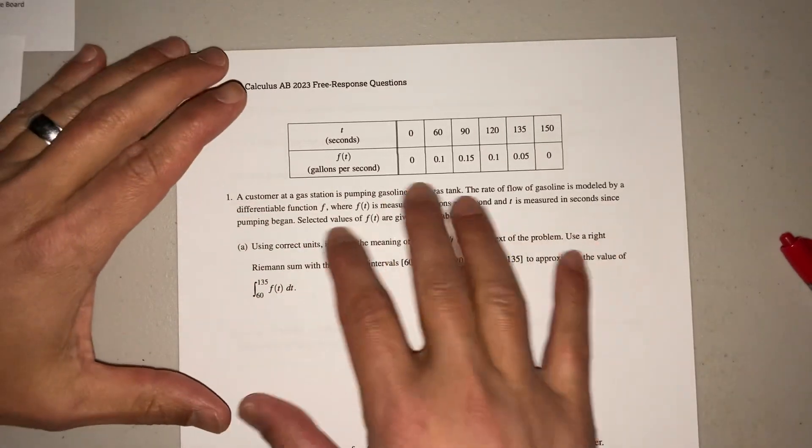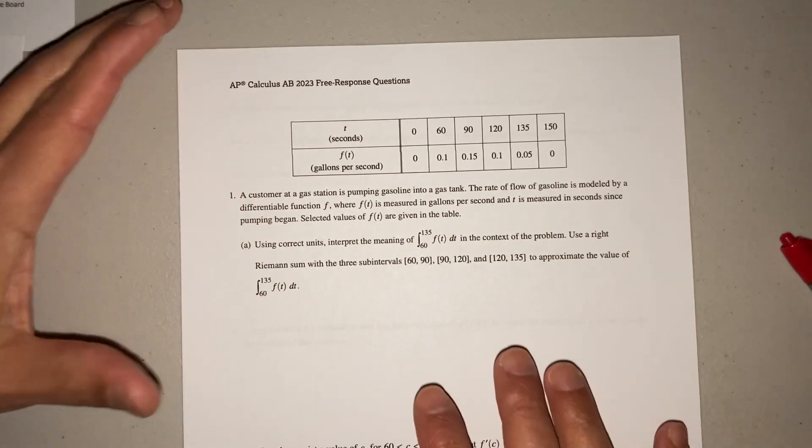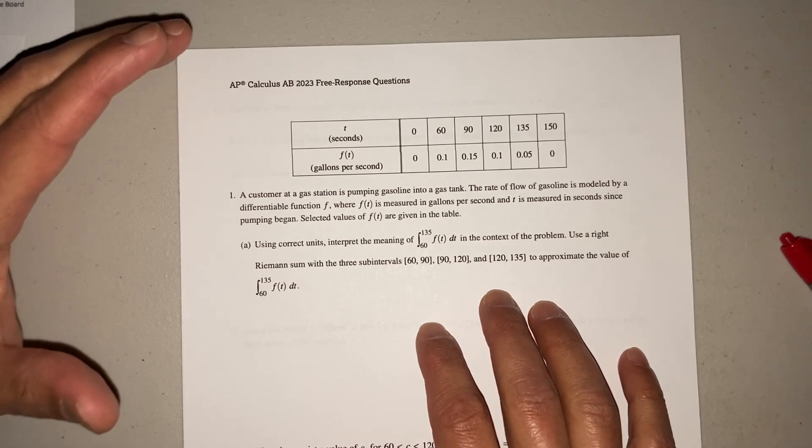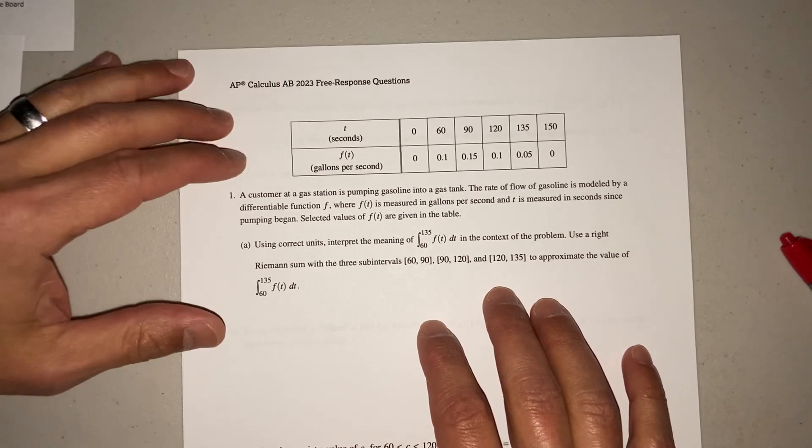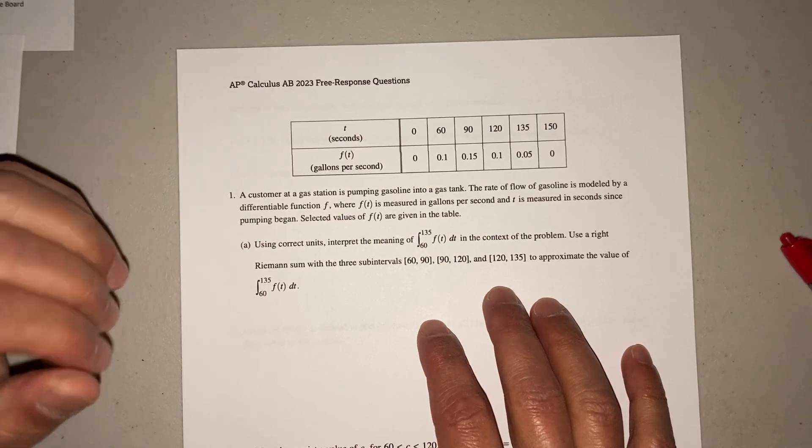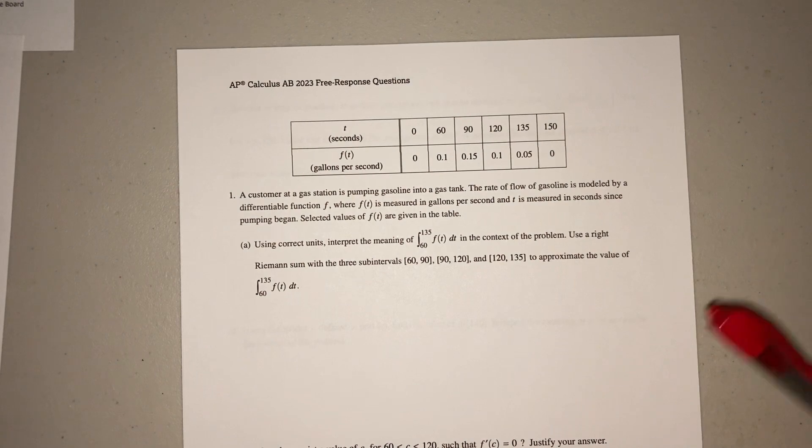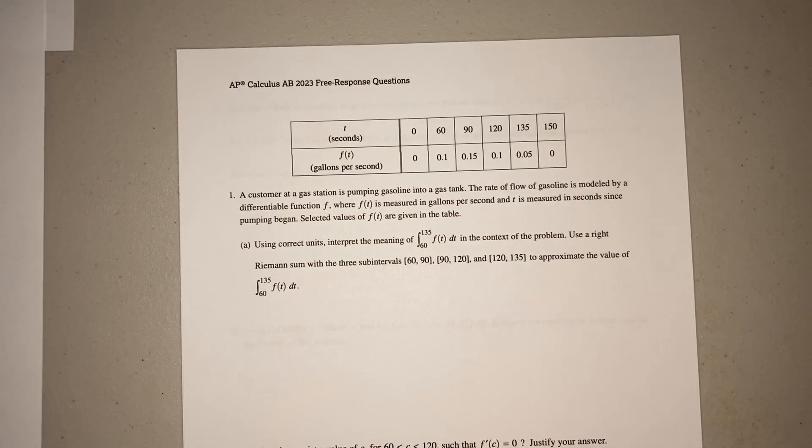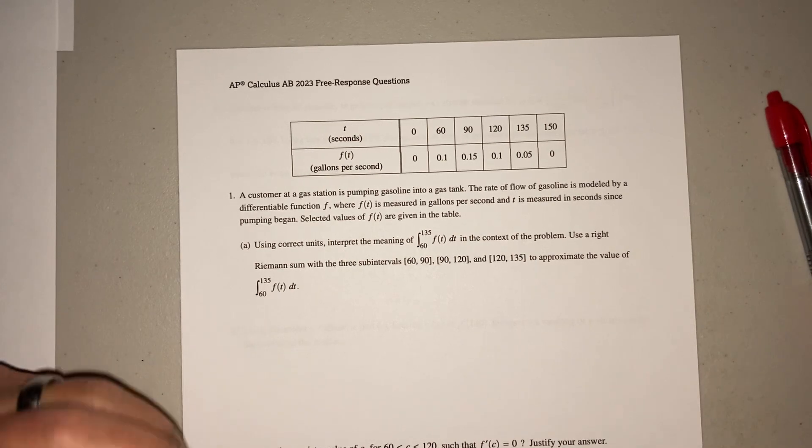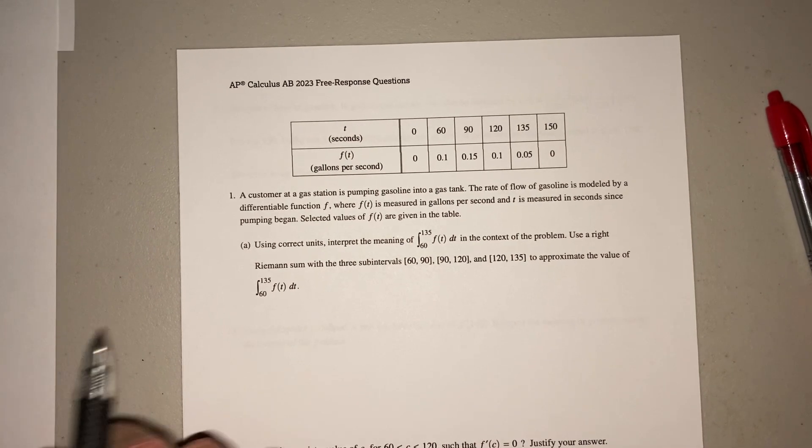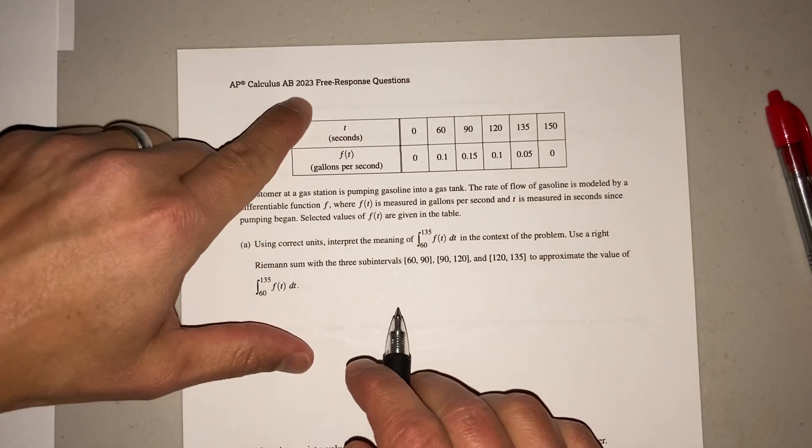One of them I call just table questions. And anytime I see a table question, I'm thinking they're going to ask me something about rate of change or they're going to ask me for a Riemann sum, something like that. So let's go ahead and do some of these. I'm going to try to do this short and quick and just have you guys kind of get an idea of how to do these. This is from 2023.